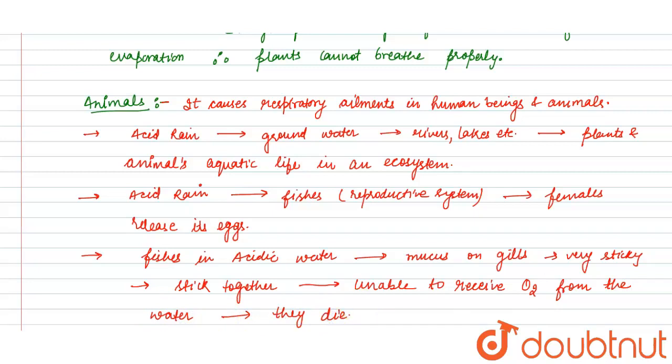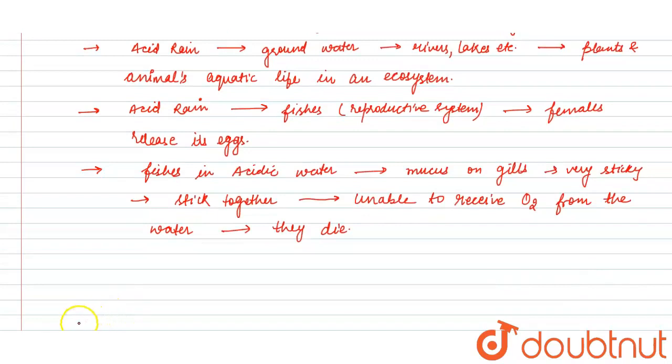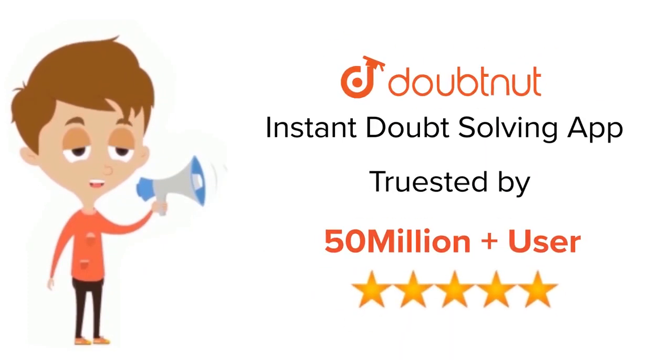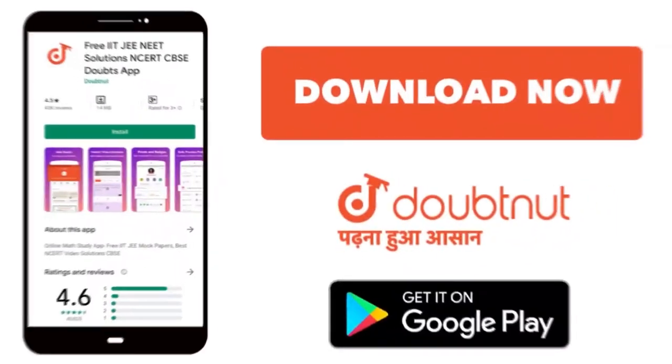So acid rain has negative impacts on the health of animals and plants. Thank you. For class 6 to 12th, IIT-JEE, and NEET level, trusted by more than 5 crore students, download Doubtnet. Good afternoon, thank you for watching.